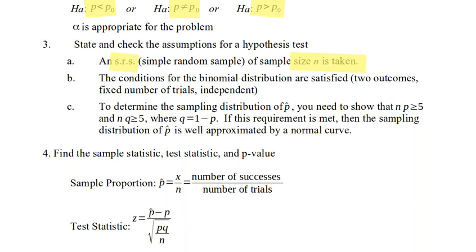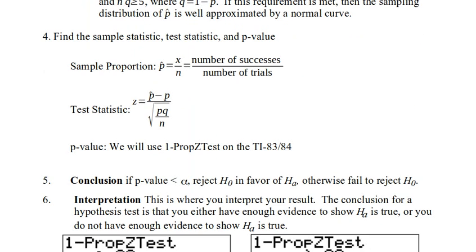So our next goal is to find the sample statistic, the test statistic, and the p value. The sample statistic is simply the sample proportion, that is the number of successes over the number of trials x divided by n. The test statistic is still a z value, but we're dividing by the square root of pq over n. And then we'll get our p value out of our calculator using the test.